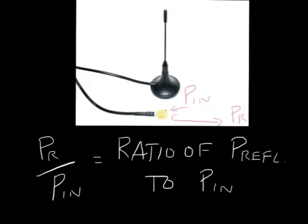If you have an antenna, you can't connect something to the output — you feed power in but it's launching out into space. You can measure how much gets reflected, though. If 10% comes back, then 90% or maybe a little bit less is getting radiated out. So there's a ratio: reflected power compared to input power.